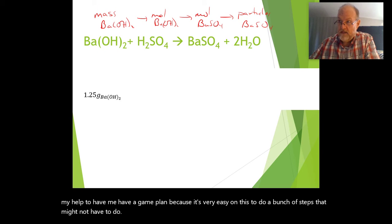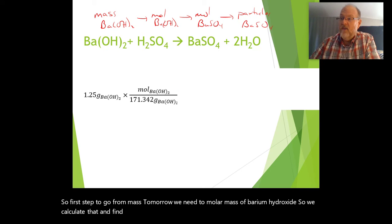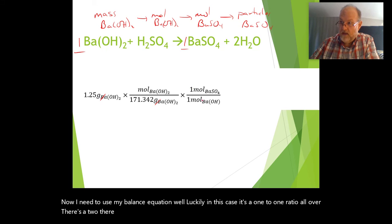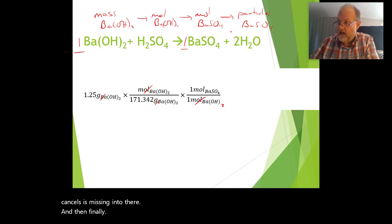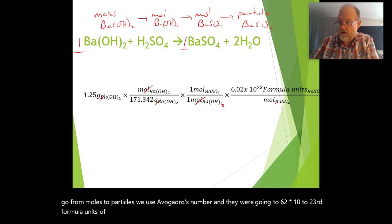First step to go from mass to mole, we need the molar mass of barium hydroxide. We calculate that and find out that that is 171.342 grams per mole. Now I need to use my balanced equation. Luckily in this case, it's a one-to-one ratio. And then finally, last step, I need to go from moles to particles. We use Avogadro's number: 6.02 times 10 to the 23rd formula units of barium sulfate for every mole of barium sulfate. So the moles of barium sulfate will cancel.